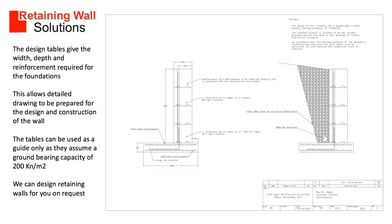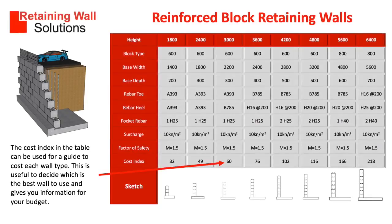The tables can be used as a guide only, as they assume a ground bearing capacity of 200 kN per square metre. We can design retaining walls for you on request. The cost index in the table can be used as a guide to cost each wall type. This is useful to decide which is the best wall to use and gives you information for your budget.